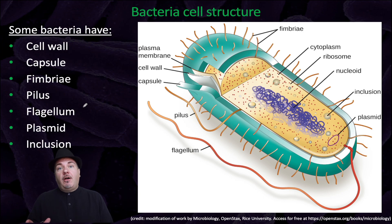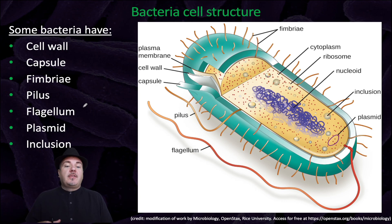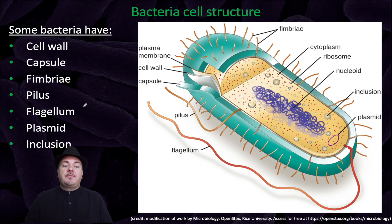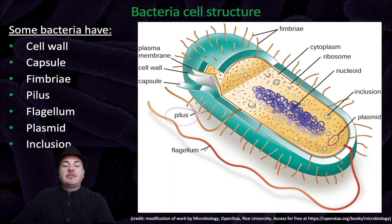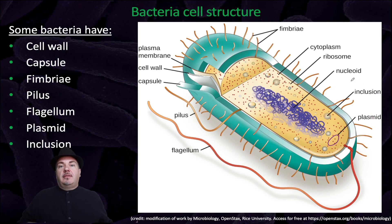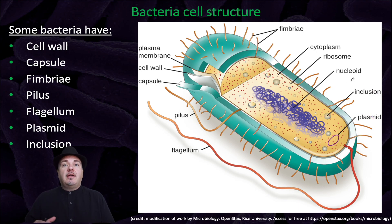Some bacteria, but not all, have these additional structures: a cell wall, which we'll talk about a lot; a capsule, which is kind of a thick, slimy coat; fimbriae, which look like hairs; a pilus; a flagellum; a plasmid; and an inclusion. We'll go into more detail about what these structures are and their purpose in other videos.